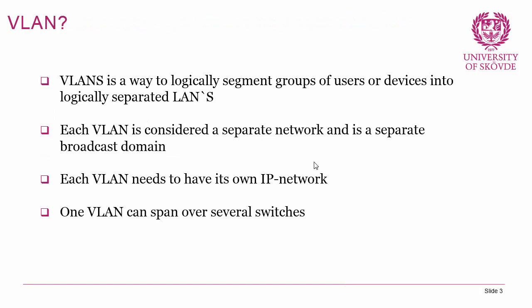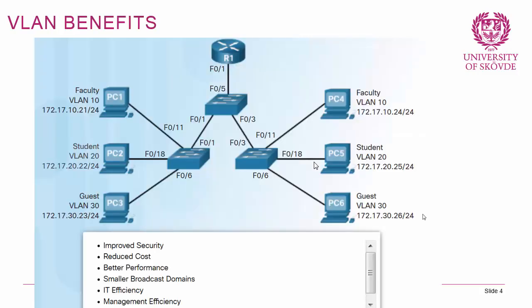A VLAN is essentially a way to logically segment groups of users or devices into logically separated local area networks. Remember from previous lectures that whenever we have a bunch of devices connected to a switch, that makes one broadcast domain and one IP network. But we can segment the switch using VLANs to house different broadcast domains and different IP networks. One VLAN can also span over several switches.